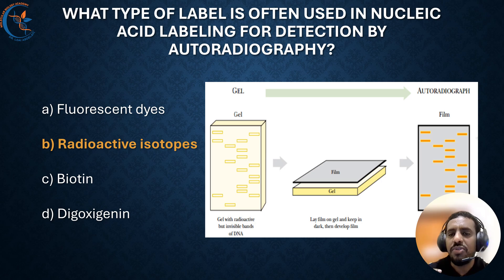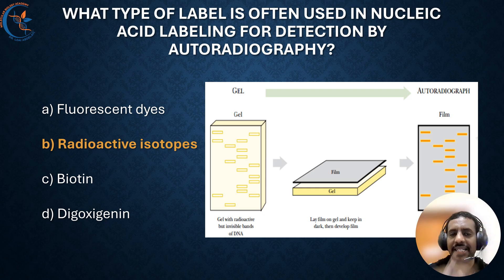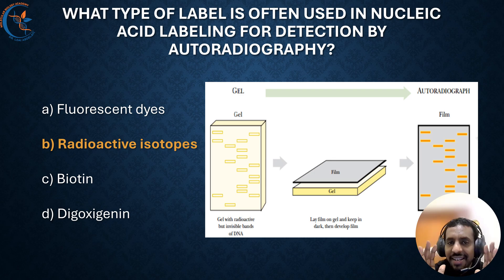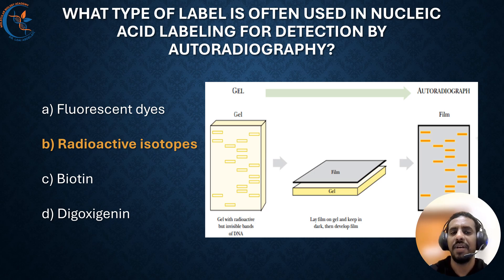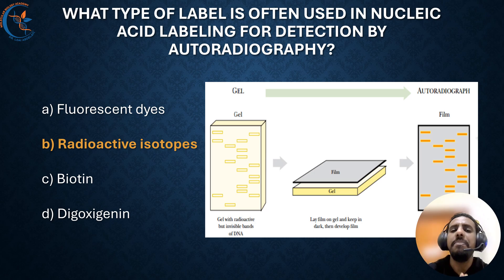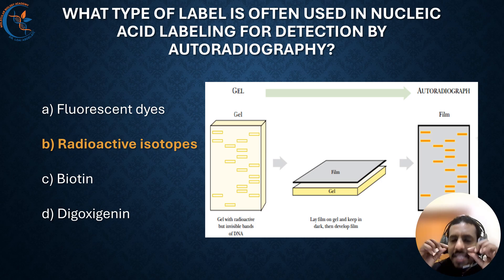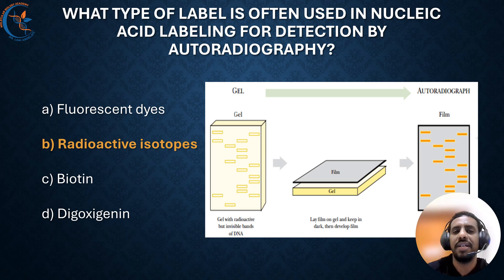As the isotopes emit energy, they produce visible signals. Finally, these signals form images that pinpoint the exact location of the specific nucleic acid sequences. This radioactive labeling makes it possible to detect even a tiny amount of nucleic acid with high accuracy.